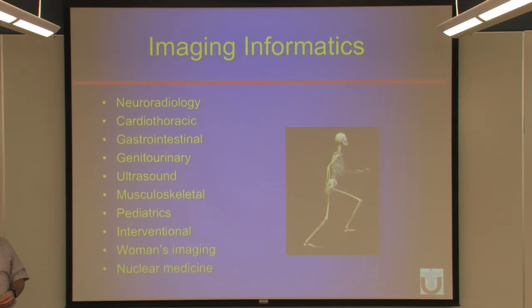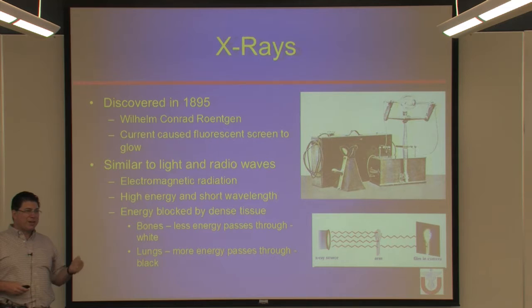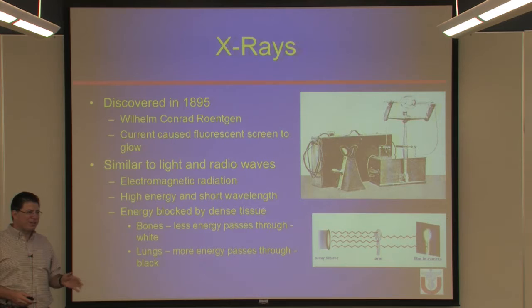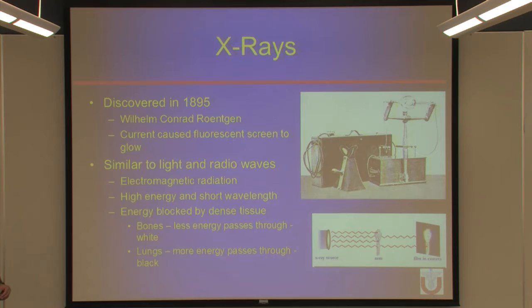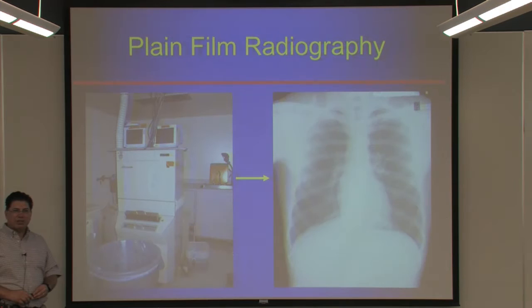Medical imaging is a relatively new specialty — it was only about a hundred years ago that Röntgen discovered x-rays. He was working with vacuum tubes and noticed a fluorescent screen on the other side of his lab glowed every time he turned on current in the vacuum tube. He locked himself in his lab for a couple of days and didn't know what was crossing the room, so he just called them x-rays. That's still what we talk about now. X-rays are electromagnetic radiation and still the basis of most of what we do in radiology.